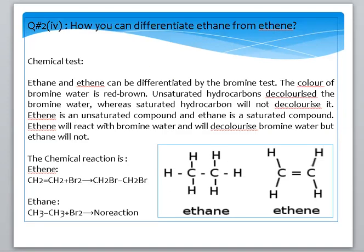The next part of question number 2 asks how you can differentiate ethane and ethene. We can differentiate ethane and ethene using physical and chemical characteristics. A key chemical test is the bromine water test.